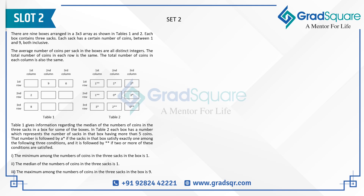In table two, each box has a number representing the count of sacks in that box having more than five coins. That number is followed by one asterisk if the sacks satisfy exactly one of three conditions, or two asterisks if two or more conditions are satisfied. The three conditions are: the minimum number of coins in the box is one, the median is one, or the maximum number of coins is nine.